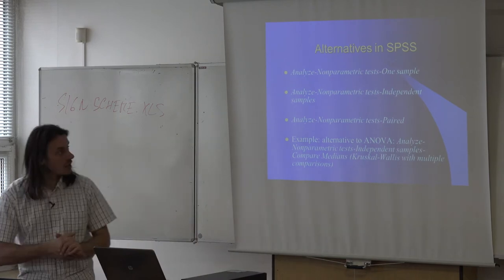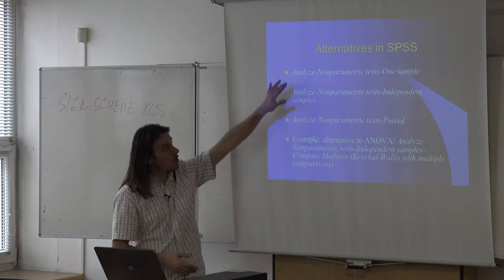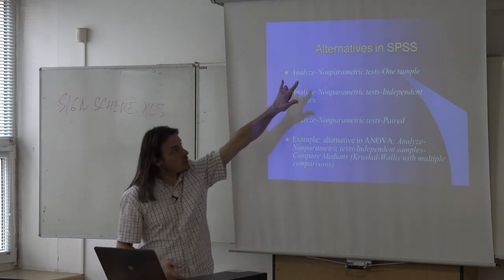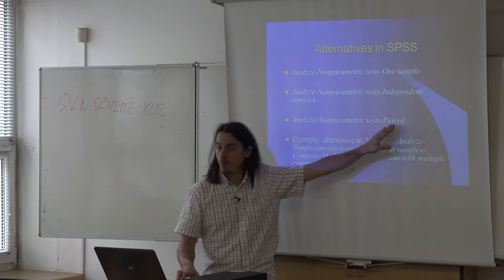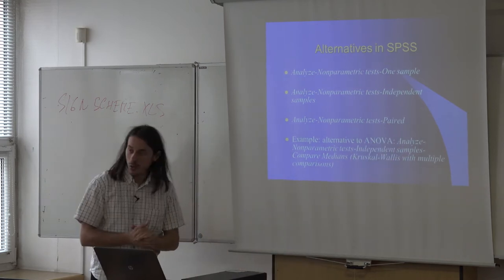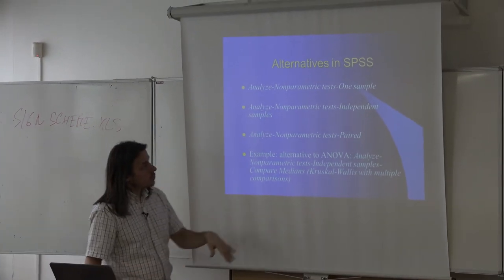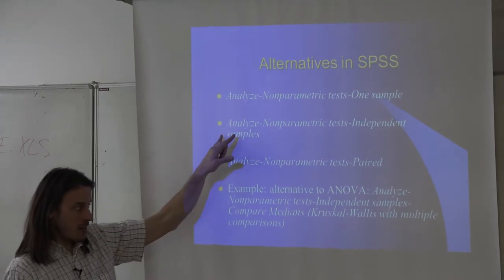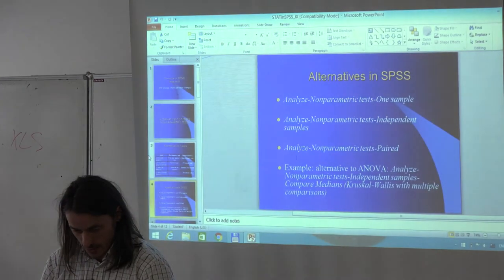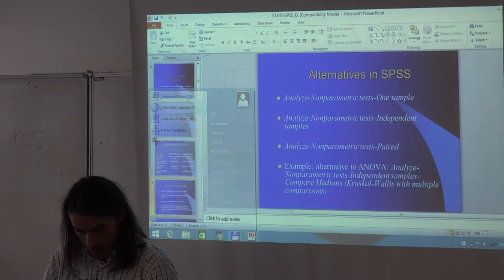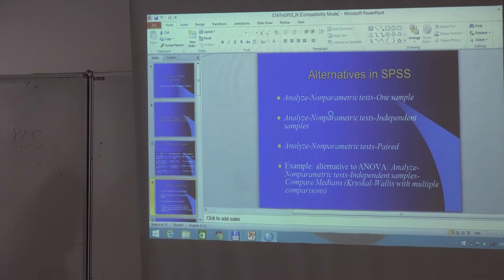Here is where we find these procedures in SPSS: go to Analyze, then Non-Parametric Tests. There are three options: one sample, independent samples, and paired. To carry out the alternative to analysis of variance, go to Non-Parametric Tests, then Independent Samples, and choose the correct test. Please run SPSS and open our data file.